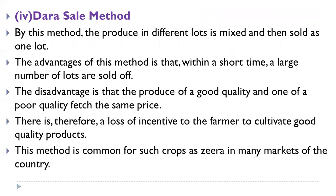The fourth method is the dara cell method. By this method, produce in different lots is mixed and then sold as one lot. The advantage is that a large number of lots are sold off in a short time. However, the disadvantage is that produce of good quality and poor quality fetch the same price due to mixing, resulting in a loss of incentive for farmers to cultivate good quality products. This method is common for crops such as jeera or spices in many markets.